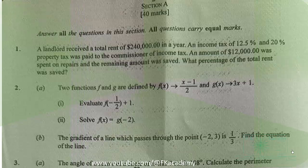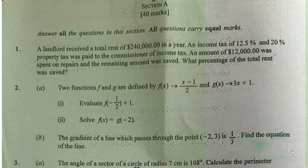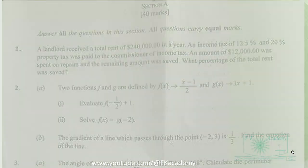Question 2: f(x) is given, and g(x) maps onto 3x + 1. We are to evaluate f(−½) + 1, then solve f(x) = g(−2). Also, the gradient of a line passing through the point (−2, 3) is 1/3; we are to find the equation of the line. Let's begin with part (a).